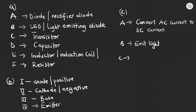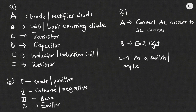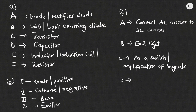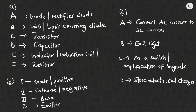For C, which is the transistor, it serves as a switch in an electrical component, and it can also be used for amplification of signals. For D, the capacitor, it is used to store electrical charges. For E, the inductor, it is used to generate a magnetic field.